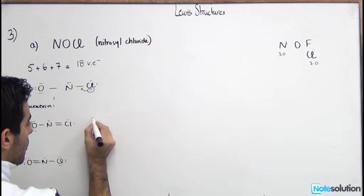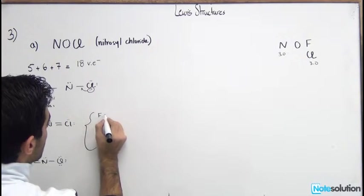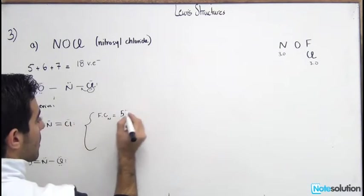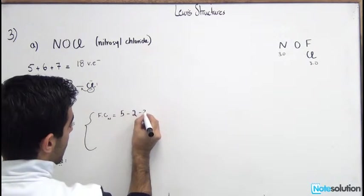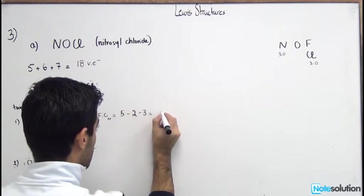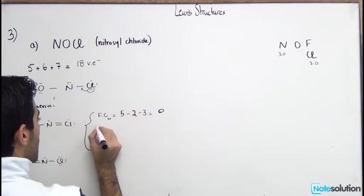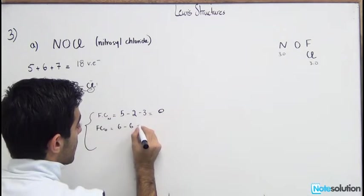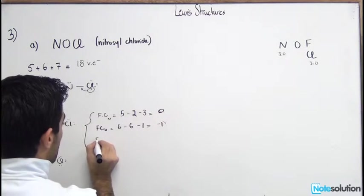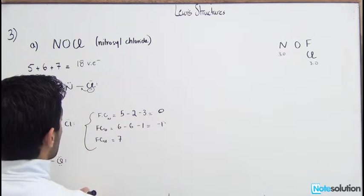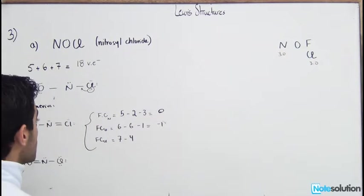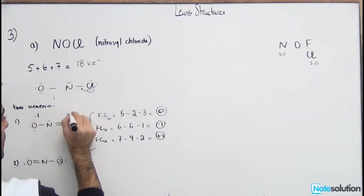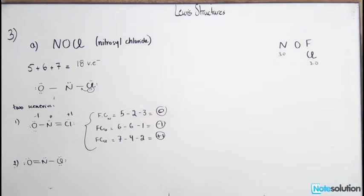For scenario one (double bond N–Cl): the formal charge of N = 5 − 2 − 3 = 0. For O: 6 − 6 − 1 = −1. For Cl: 7 − 4 − 2 = +1. So the formal charges are: N = 0, O = −1, Cl = +1.